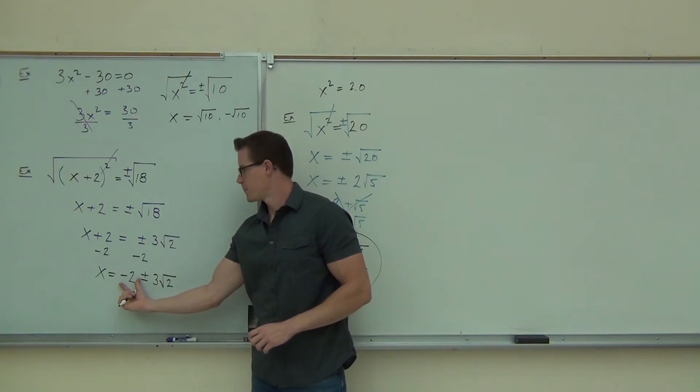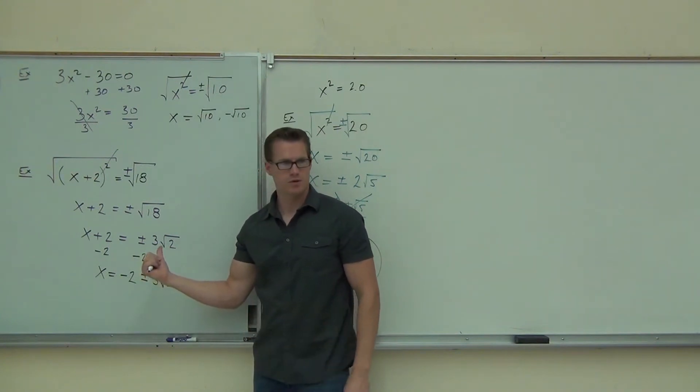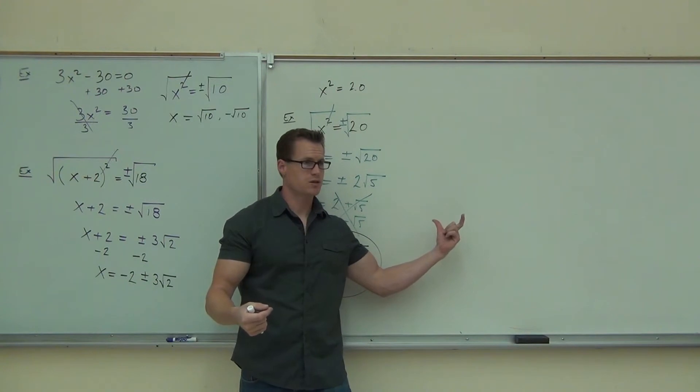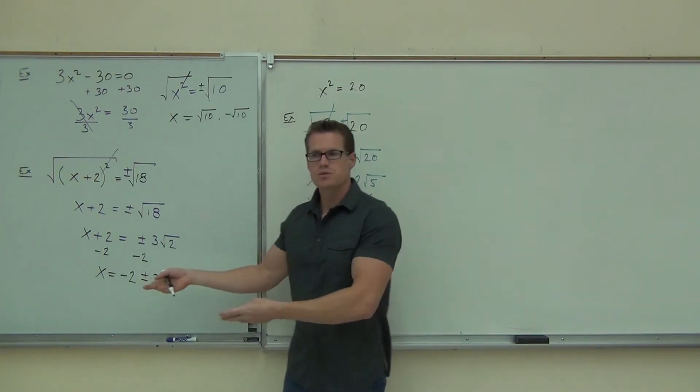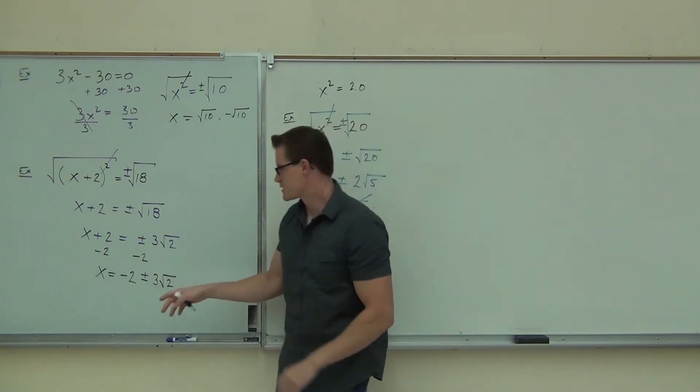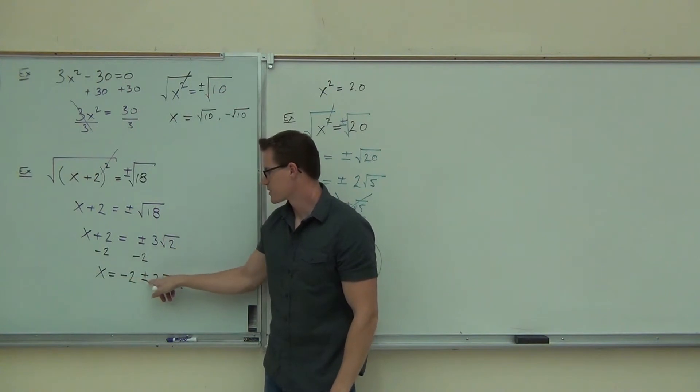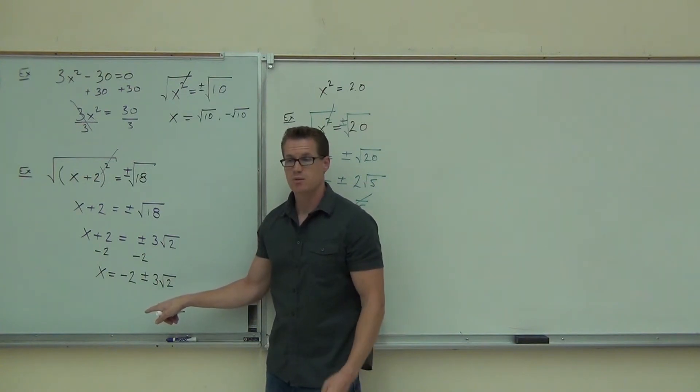We have negative 2, plus or minus 3 root 2. You with me? Now, the reason why I had to write out both solutions here explicitly was so that you not be confused over here. What this says is you have negative 2 plus 3 root 2 and negative 2 minus 3 root 2. Do you still have two solutions? Write out both solutions.